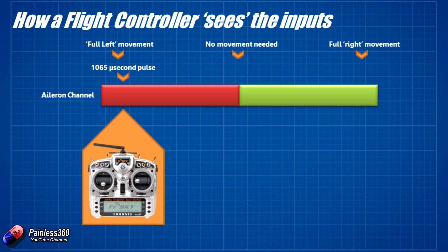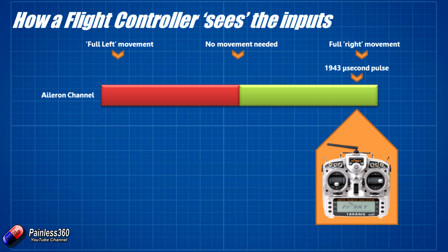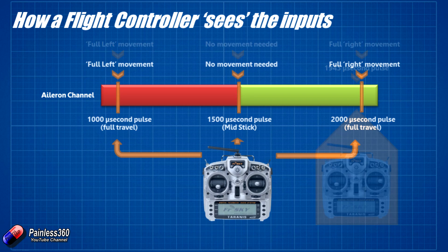If you push the stick over to the left-hand side and that value drops towards 1000 microseconds — in this case let's say 1065, just to pluck a number out of the air — then the flight controller will say you want to go that direction really quickly, because we're nearly down to the lowest value of 1000 microseconds. Similarly, if you push it all the way to the right, it goes all the way up to 1,943 microseconds — again, just a number plucked out of the air — then the flight controller says that's nearly right up against the 2000 maximum value, and they really want to go in that direction really badly as well.